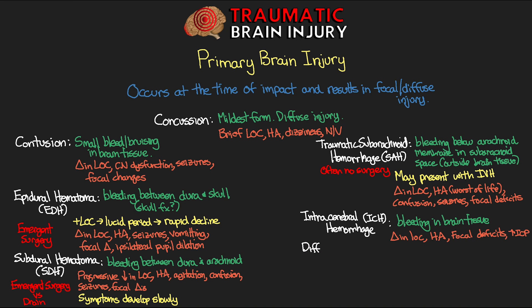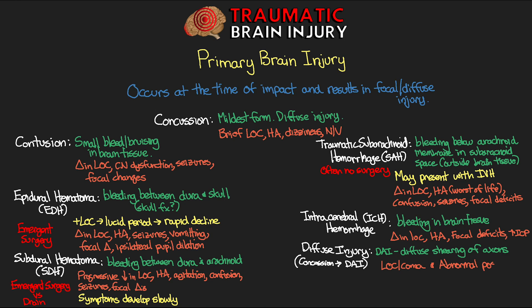Finally, the last injury is something we call our diffuse injury, which exists on a continuum of severity — from concussion being our least severe diffuse injury, all the way up to something we call diffuse axonal injury, or DAI. In the case of DAI, we have diffuse shearing of these axons. These patients present with loss of consciousness, coma, and abnormal posturing. Oftentimes these will appear normal on the CT, and if anything you might just see diffuse edema as a result. The patient's prognosis is really based on the severity of this injury, and for really severe cases, the prognosis is poor.